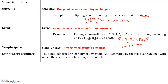Law of large numbers: the actual or true probability of an event A is estimated by the relative frequency with which the event occurs in a long series of trials. Going back to the flipping a coin example, you could flip a coin five times and it could all come up heads. But if you flip a coin 1,000 or 10,000 times, then half the time it'll come up heads and half the time it'll come up tails.